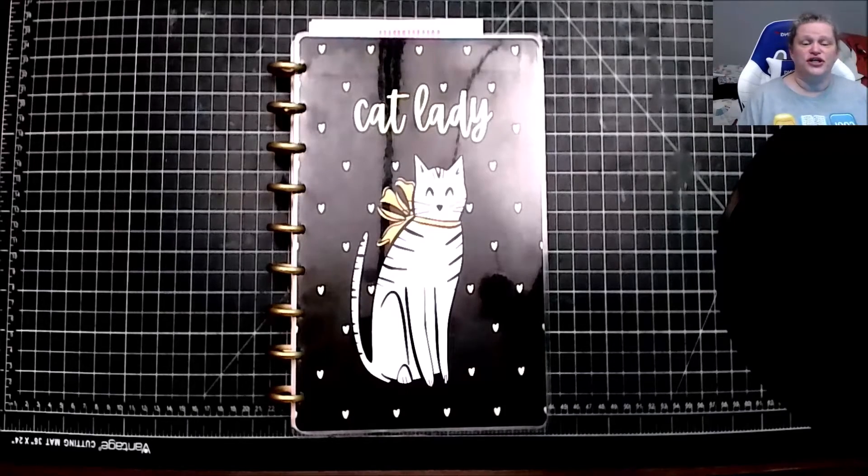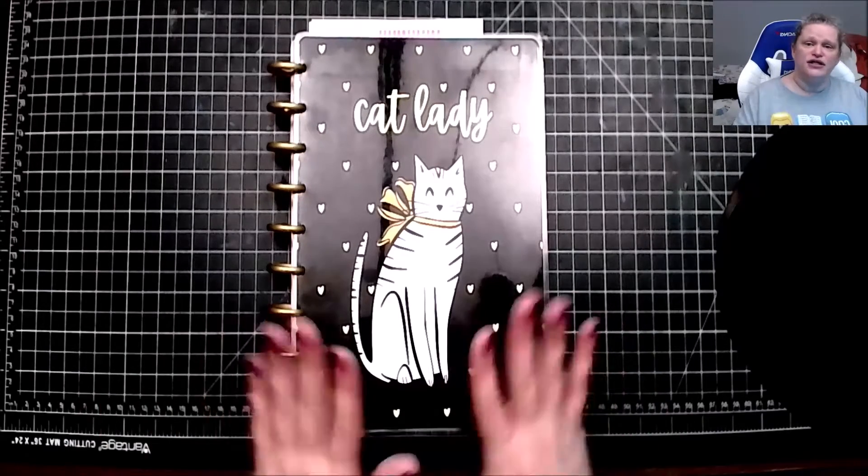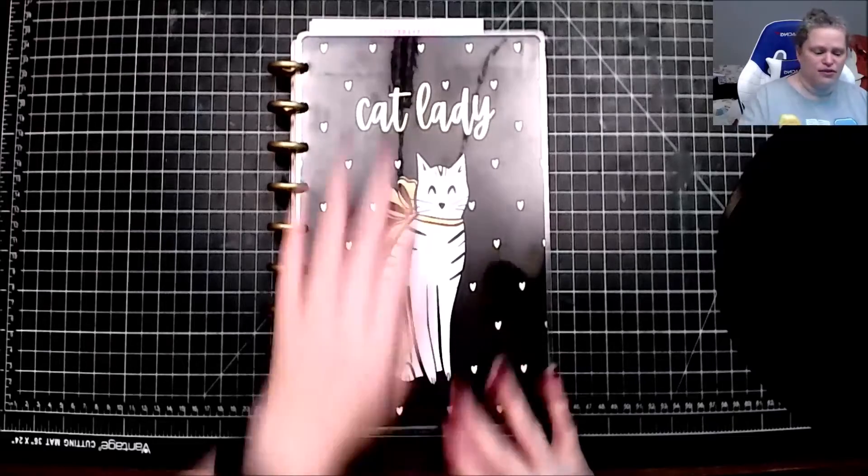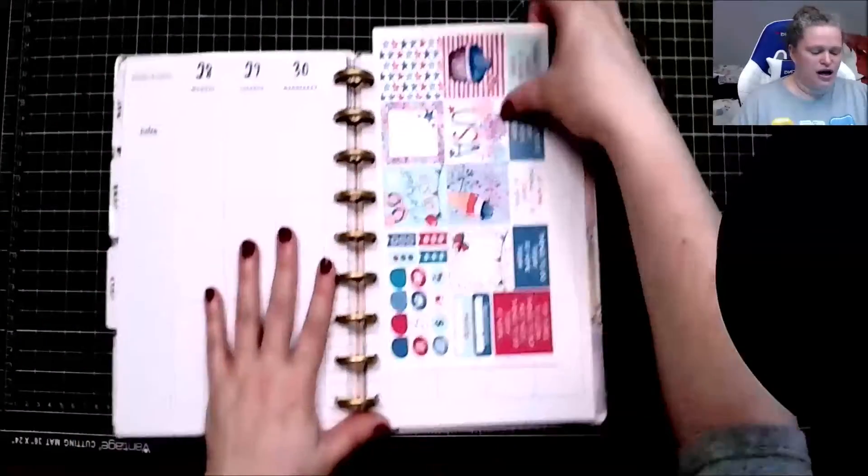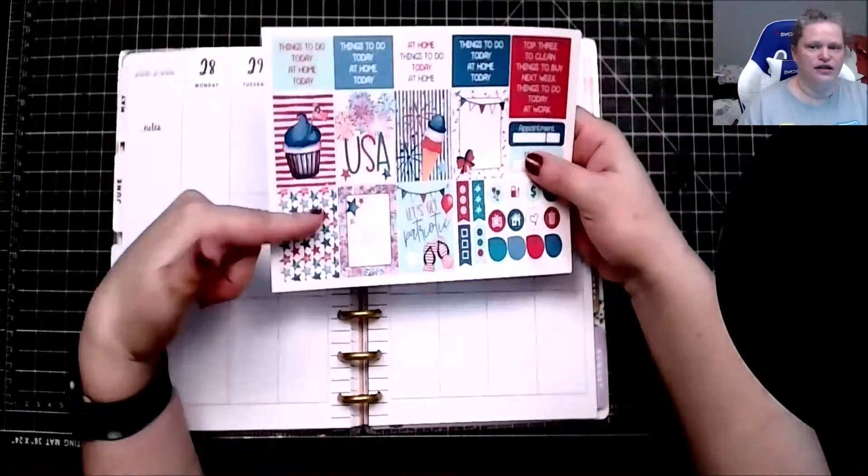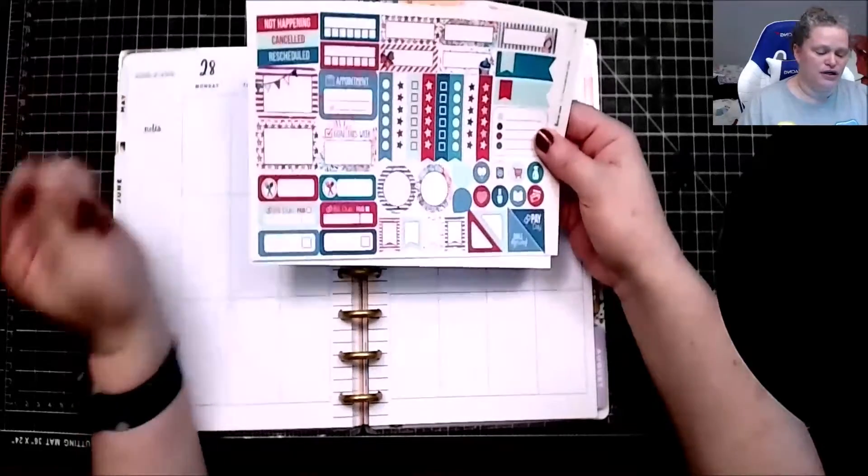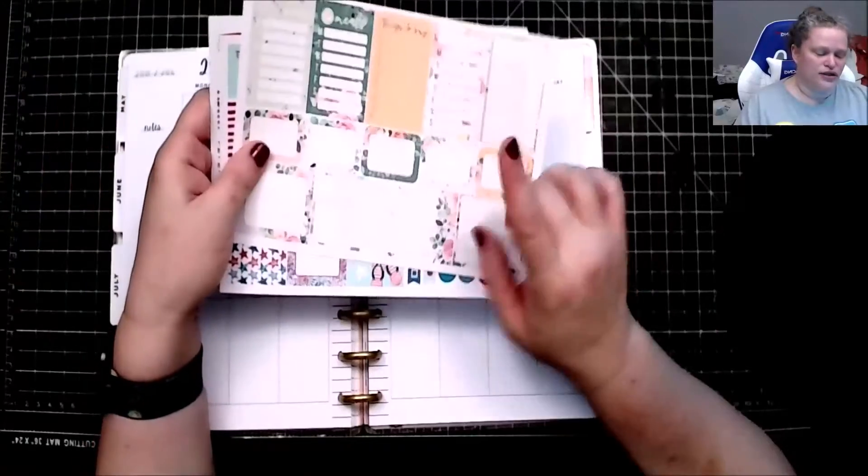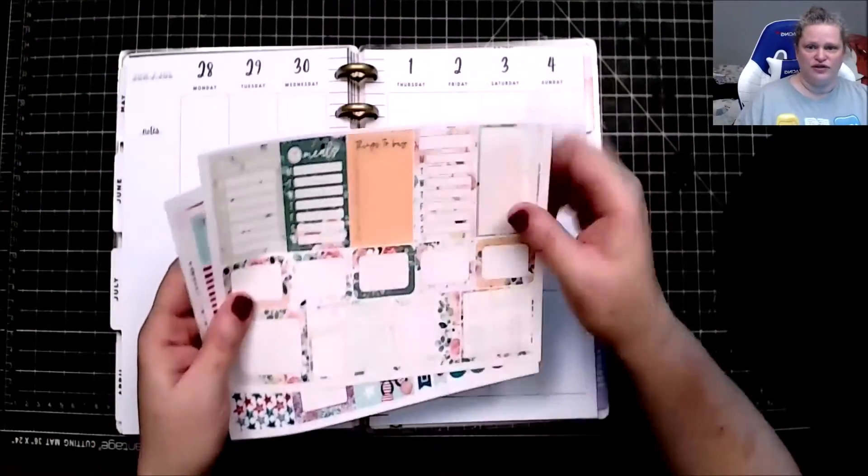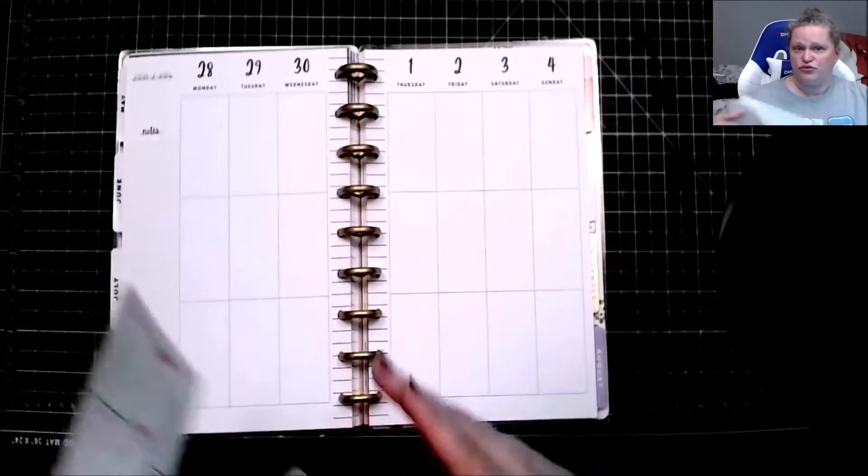Hello and welcome back to Productive Dragon's channel. My name is April and today I'm setting up my week 26 in my social media planner. I will be using this July 2021 kit from Planner Envy that I will link up here, as well as one of the things from last month, June 2021.